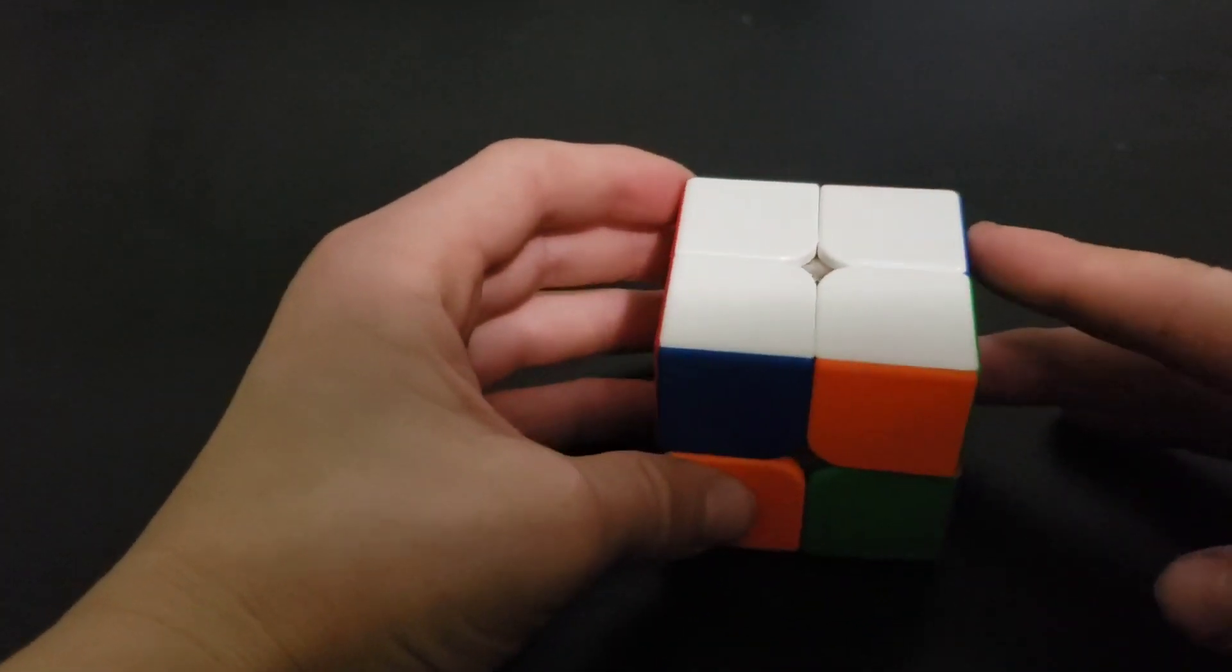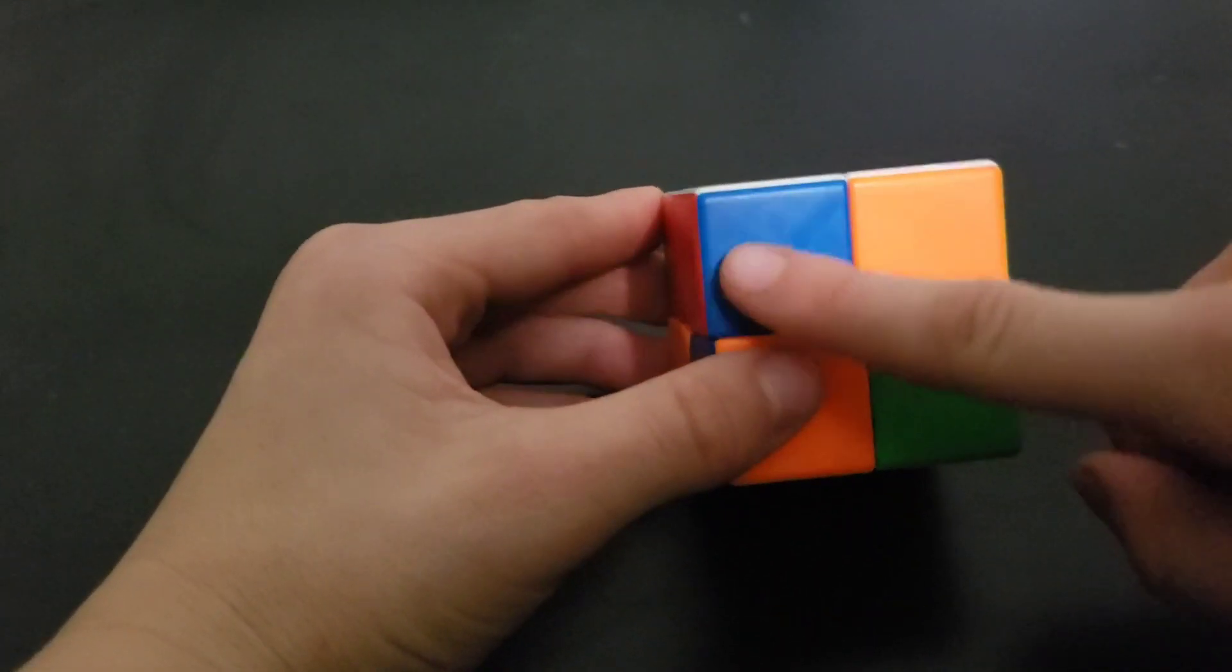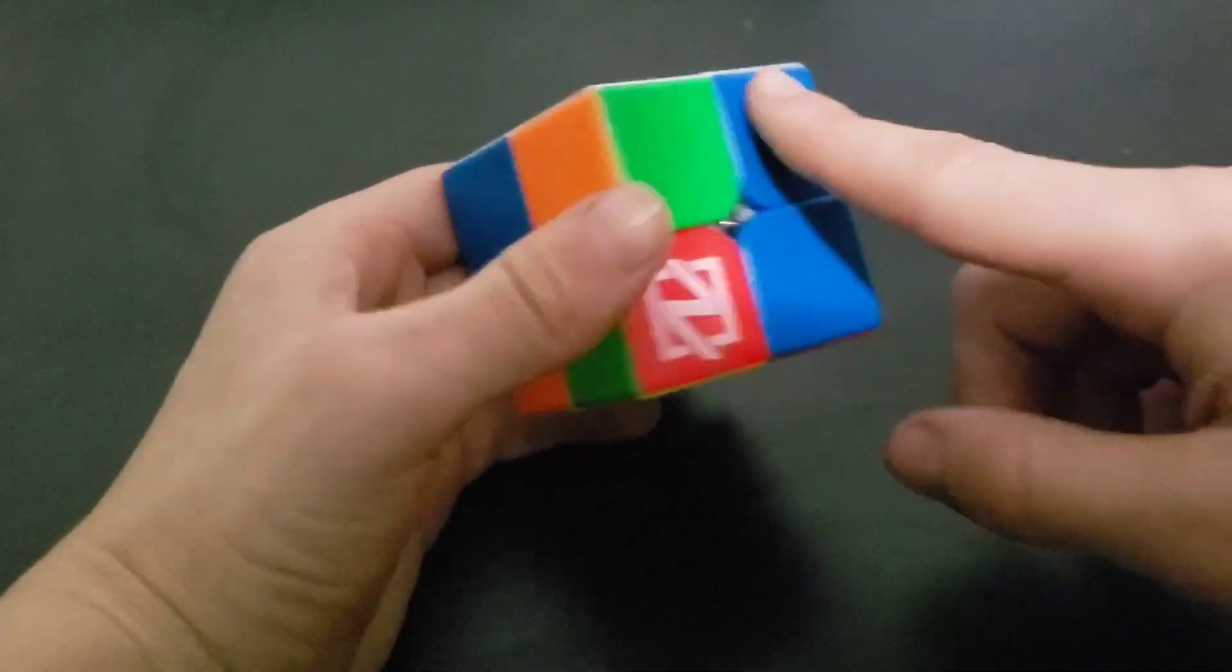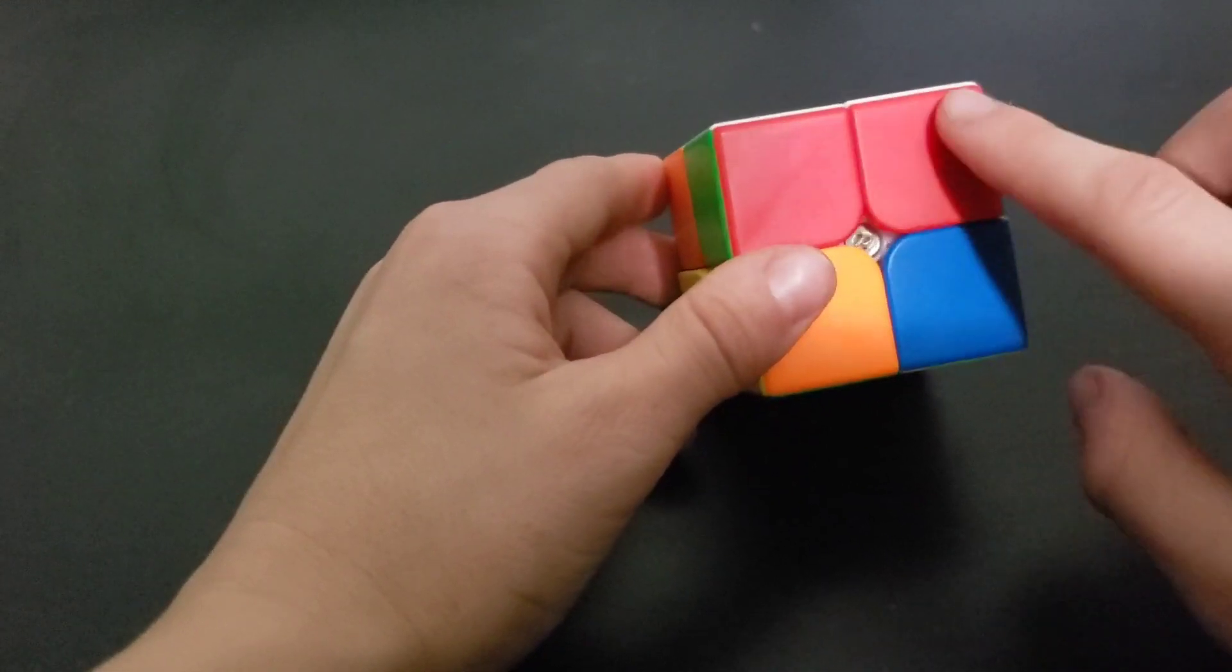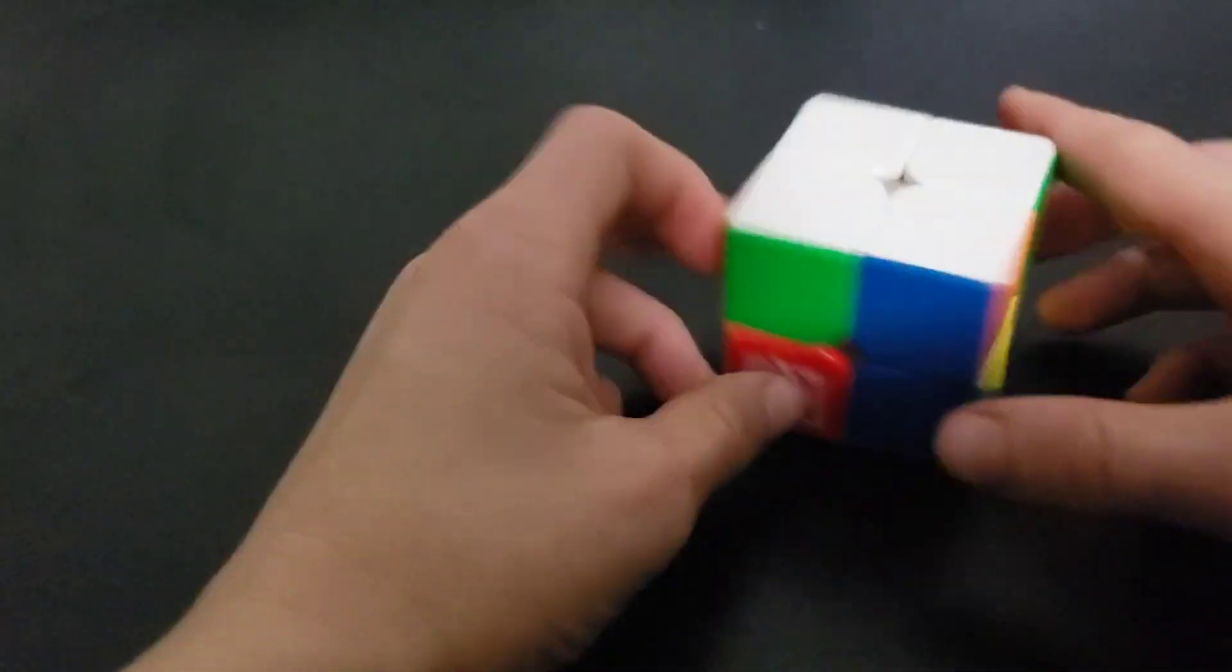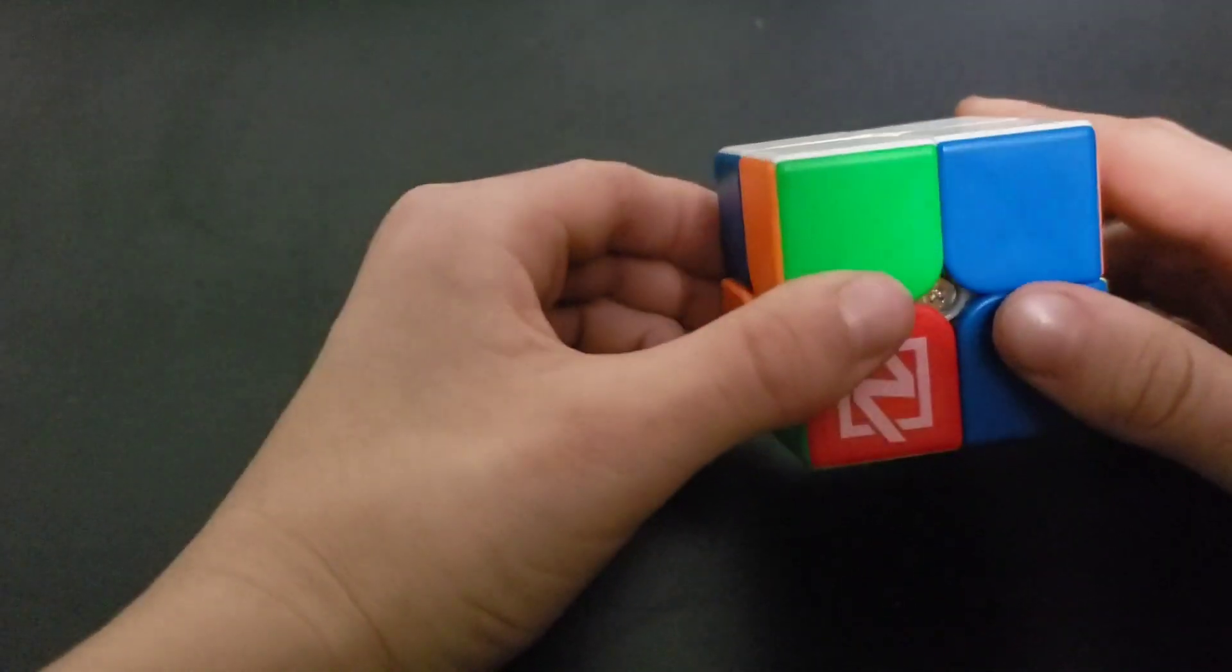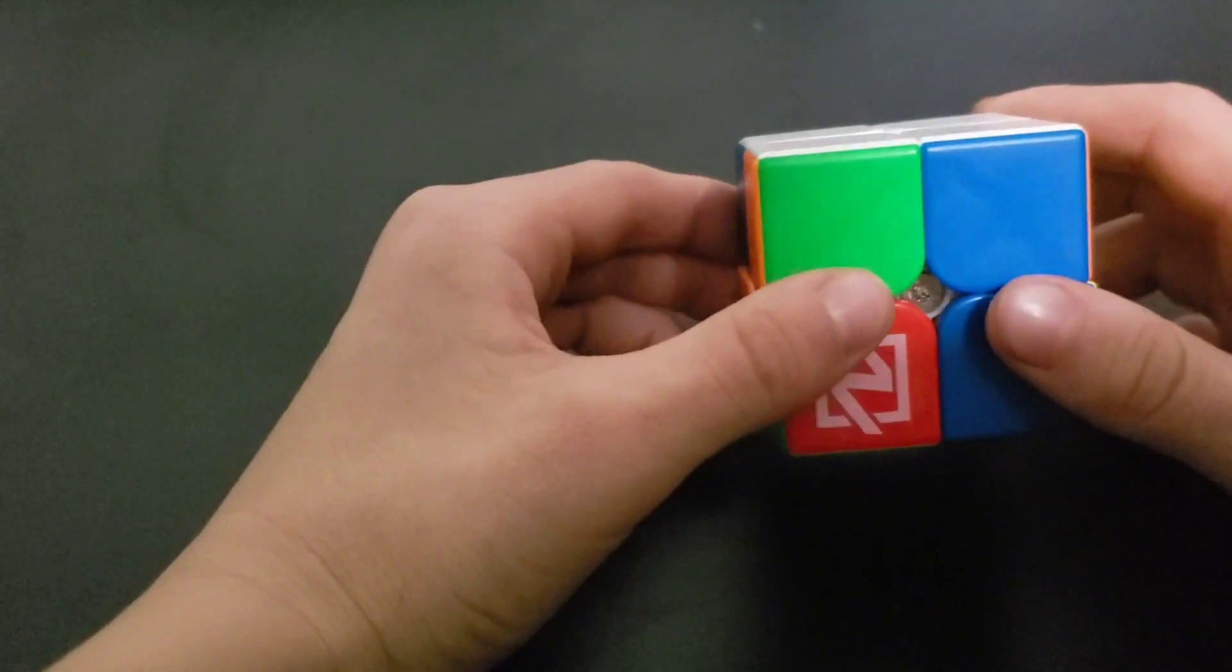Okay, so the next step is you're going to want to get two of each color lined up like this. So you're going to want to look if there's two of the same color. You're going to want to face that away from you. You're going to want to keep it like this for this whole step.